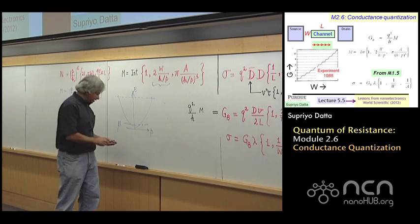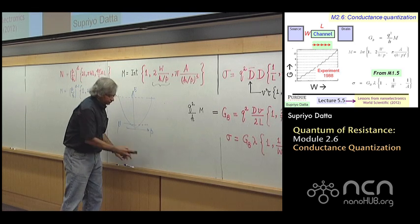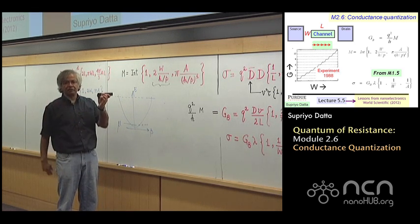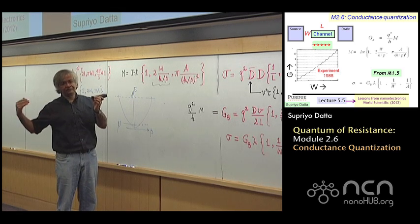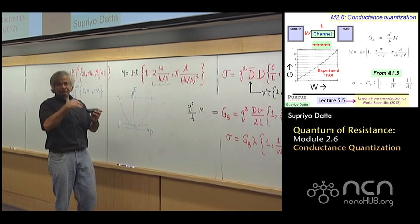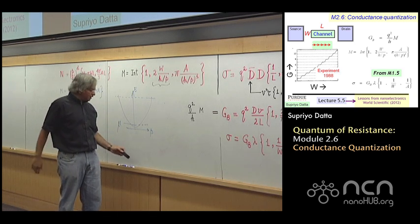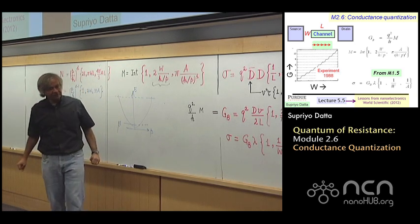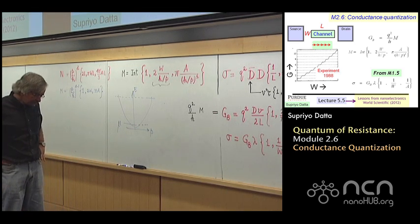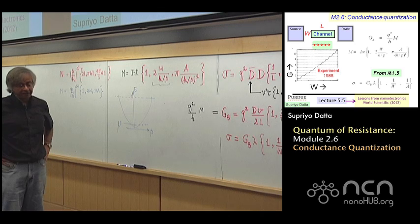So what that means is, if you had a conductor whose width was 100 atoms, you would have about 100 modes in metals. On the other hand, in semiconductors, usually you'd have far fewer modes. And so this first experiment showing this quantized conductance, that was done in a semiconductor, I believe gallium arsenide.